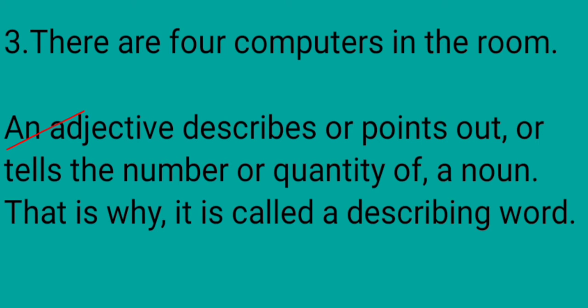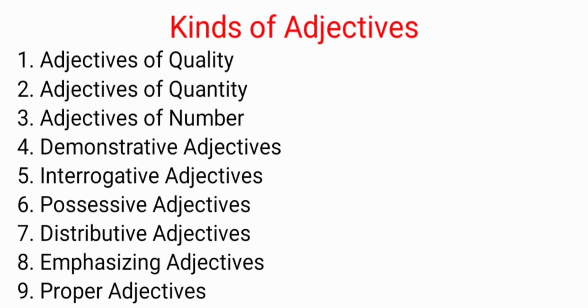We should know more about an adjective: an adjective describes or points out, or tells us the number or quantity of a noun. That is why it is called a describing word. An adjective can describe, point out a word, and also tell about number and quantity. Now we will discuss the kinds of adjectives.